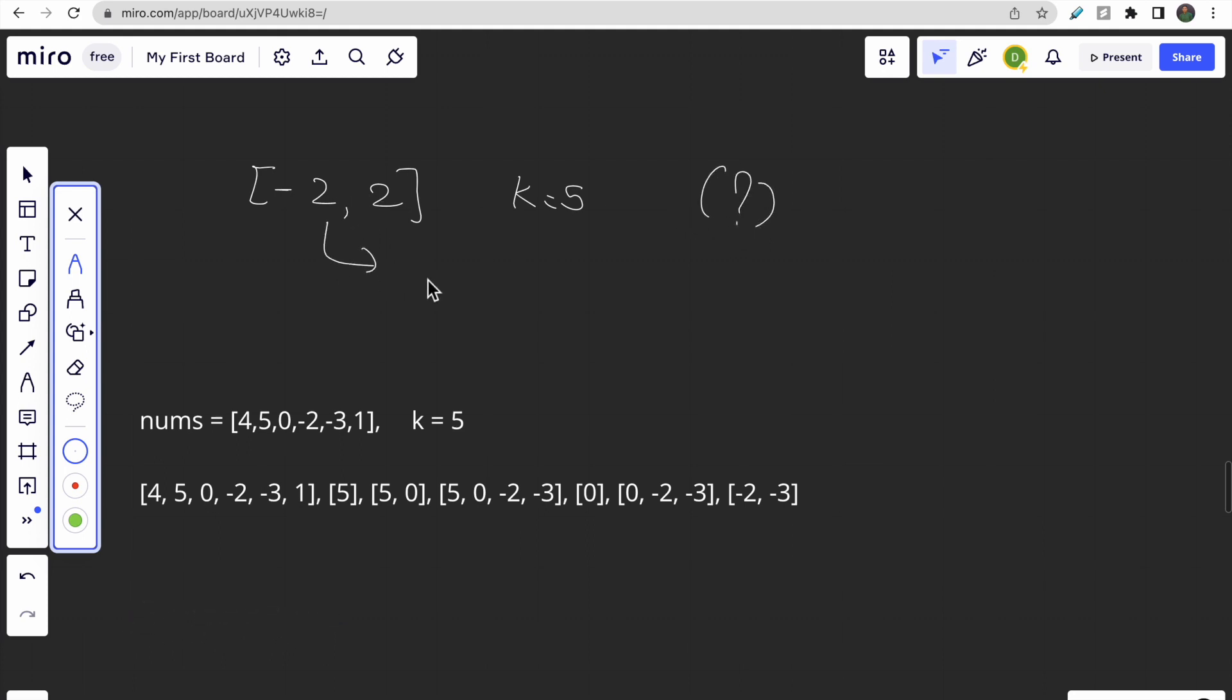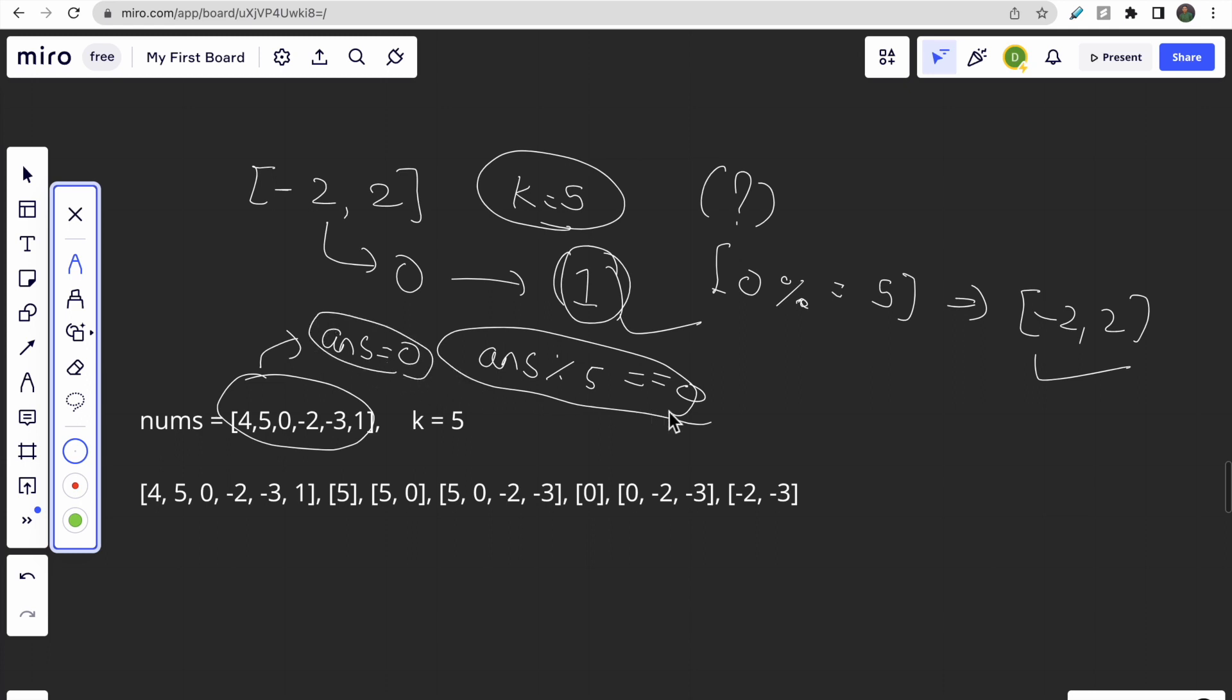The total sum of this complete array is 0. So our answer is 1 because 0 modulus 5 equals to 0. And that's why we count -2, 2 as one subarray whose modulus 5 equals to 0. Thus we return 1 as our answer. So based on this, for any given array like this, if we somehow find when the answer becomes 0 or answer modulus 5 equals to 0, then we will get the subarray whose sum is a multiple of k.